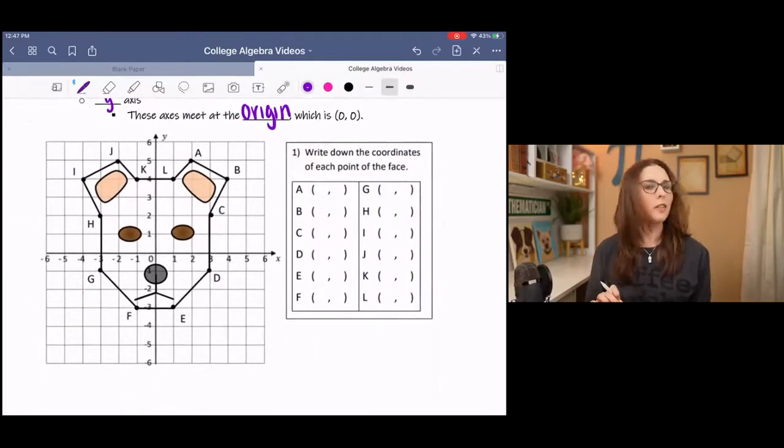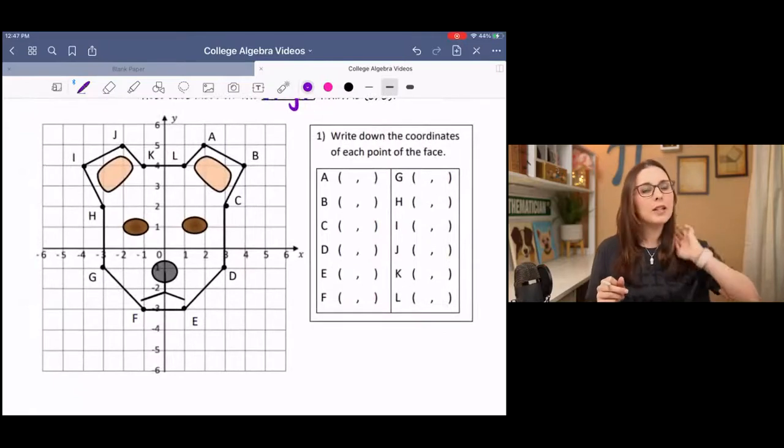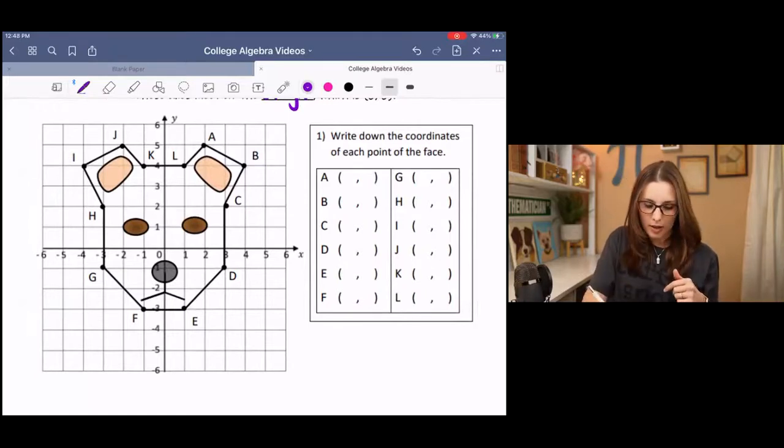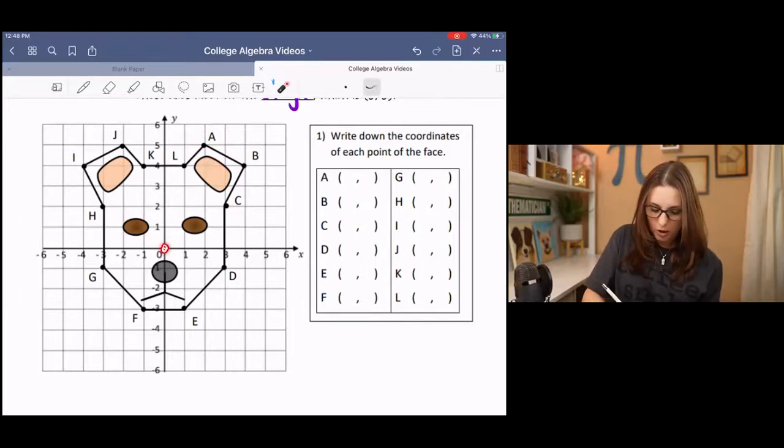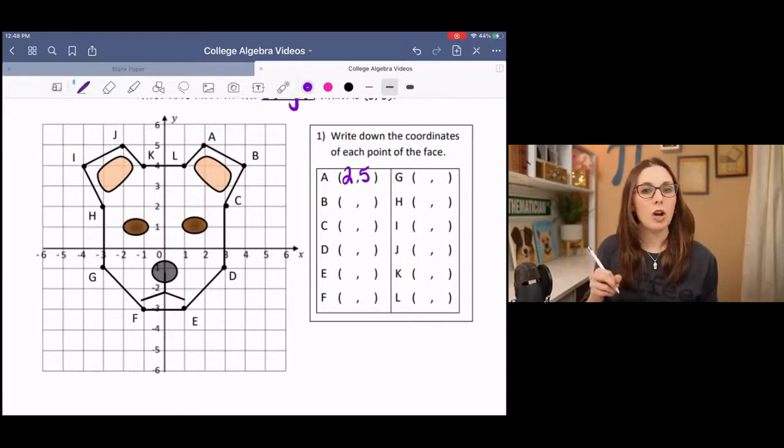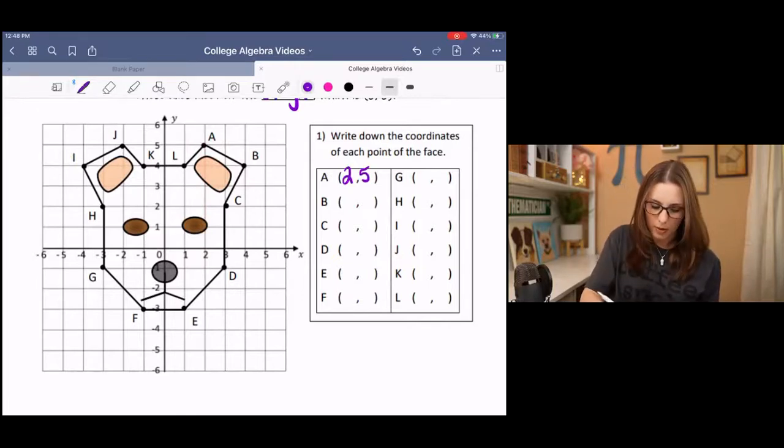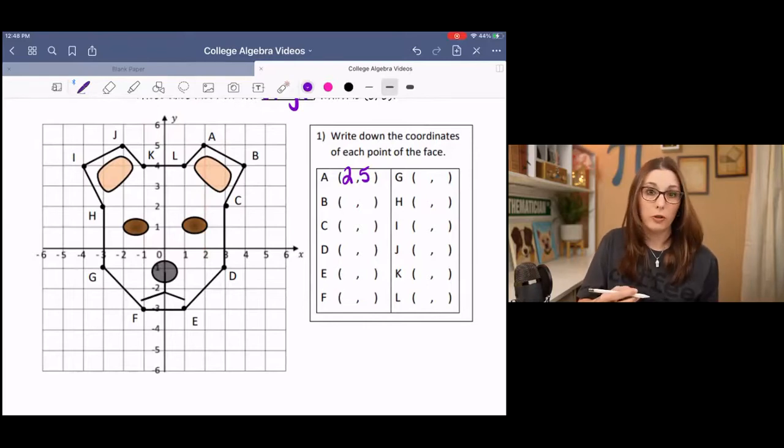And we're going to take a minute to label our points. So for point A that is up here, we would start at the origin, we would walk over 2 and we would climb up 1, 2, 3, 4, 5. So that point is 2, 5, x, y. This is my x-axis and this is my y-axis with the origin in the middle. And then you would just do that for every point.